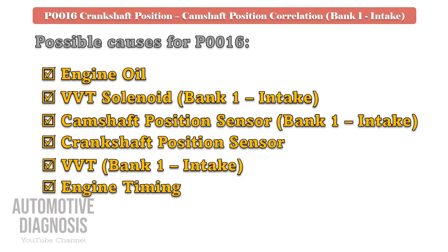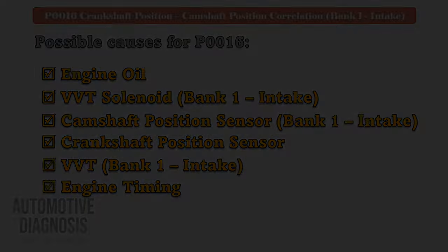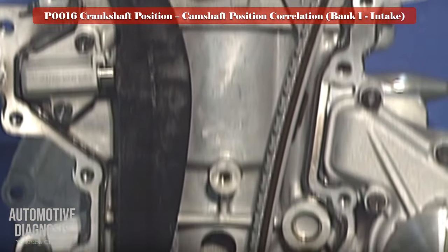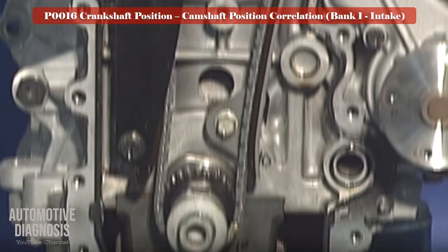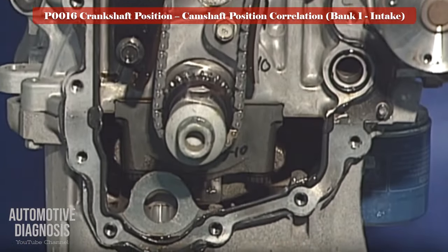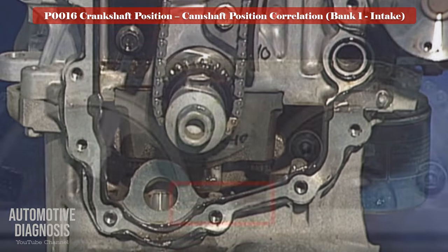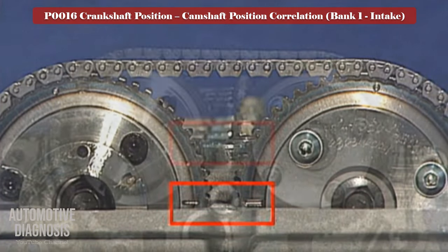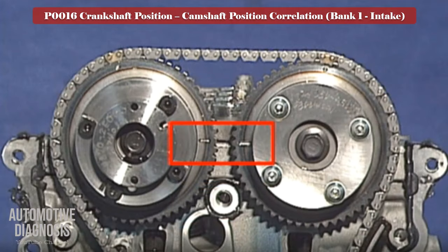The last step is to check the engine timing. If the engine timing is not correct or the timing chain is extended, you may have this fault code. Since you have already removed the camshaft, check the timing chain and adjust the engine timing.